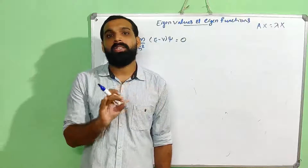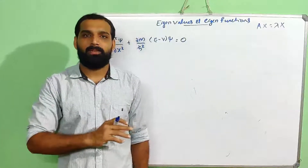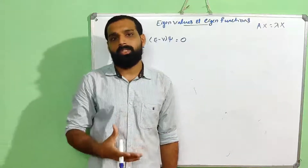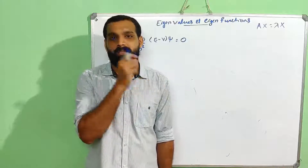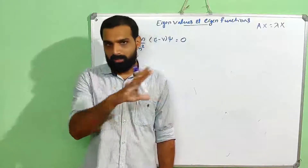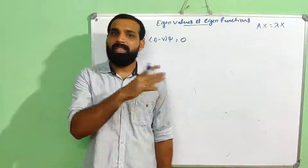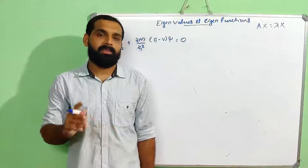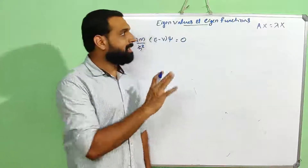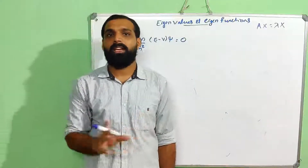In developing quantum mechanics, one approach is Schrödinger's wave mechanics and another is Heisenberg's matrix mechanics. Schrödinger used wave mechanics — it is not a matrix adaptation. Dirac also combined both into a joint mechanics framework. So we are talking about eigenvalues and eigenfunctions in this matrix context.